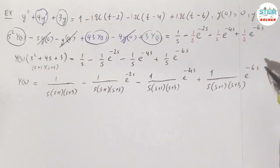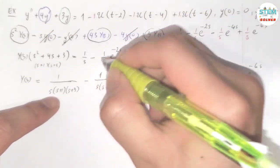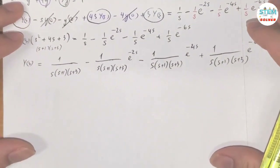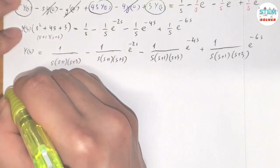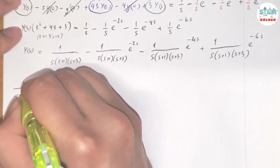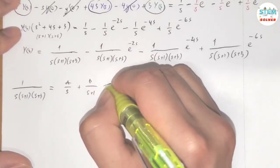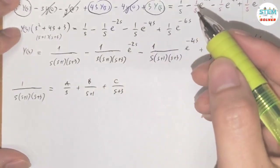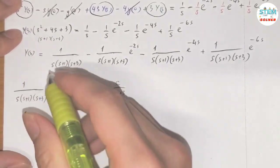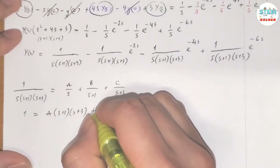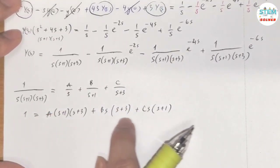For the partial fraction decomposition: 1/[S(S+1)(S+3)] = A/S + B/(S+1) + C/(S+3). The LCD is S(S+1)(S+3). Multiplying both sides by the LCD gives: 1 = A(S+1)(S+3) + B·S(S+3) + C·S(S+1).